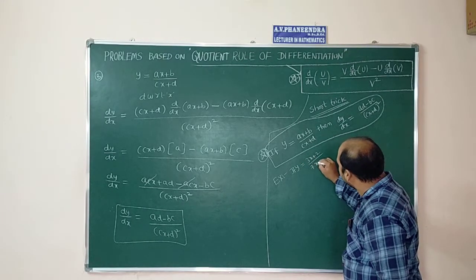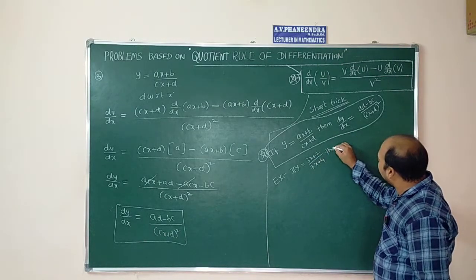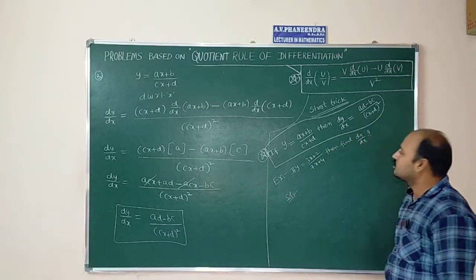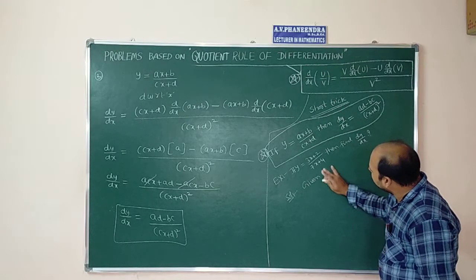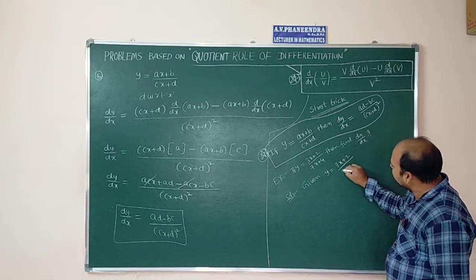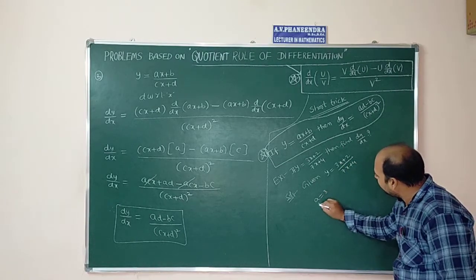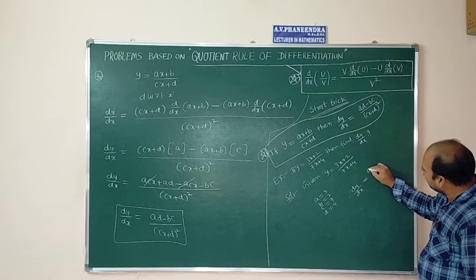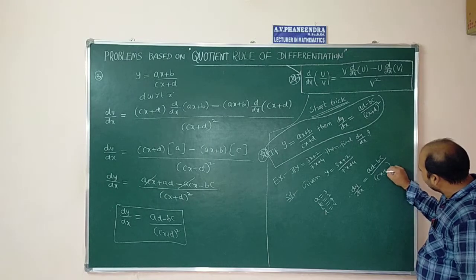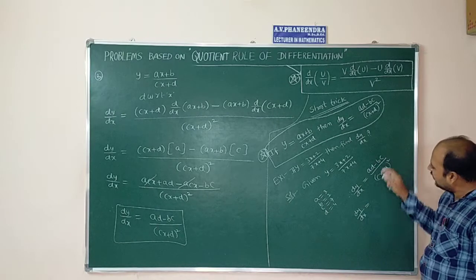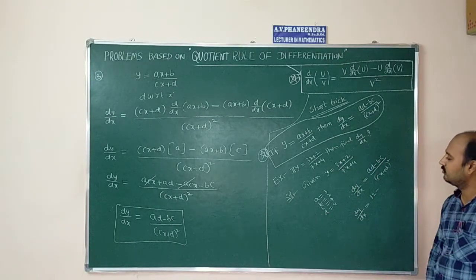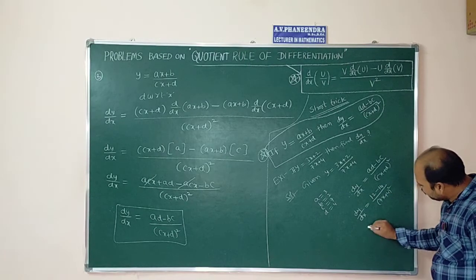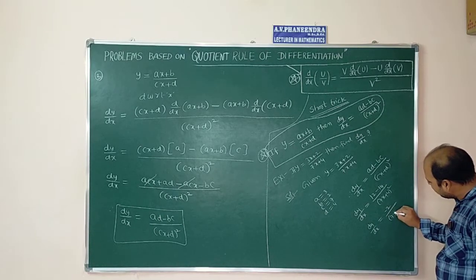Example: if y = (3x + 2)/(7x + 4), find dy/dx. Here a = 3, b = 2, c = 7, d = 4. So dy/dx = (ad - bc)/(cx + d)² = (3·4 - 2·7)/(7x + 4)² = (12 - 14)/(7x + 4)² = -2/(7x + 4)².